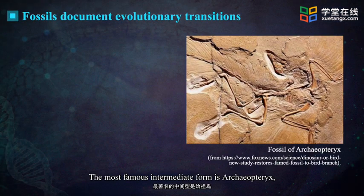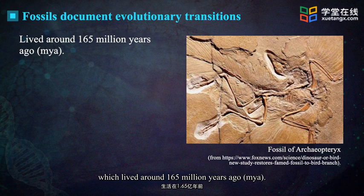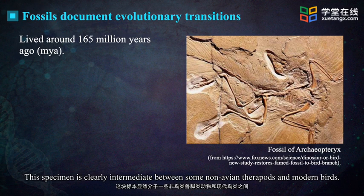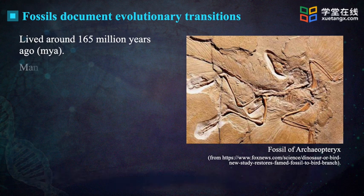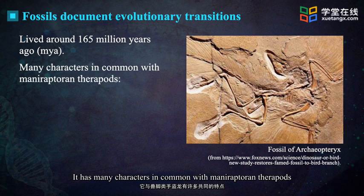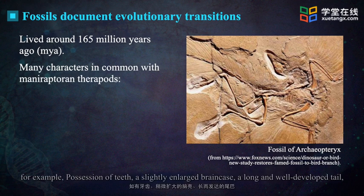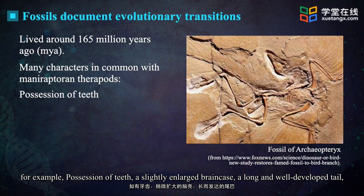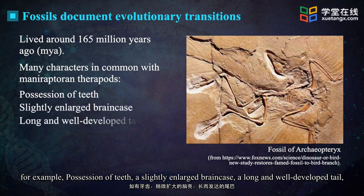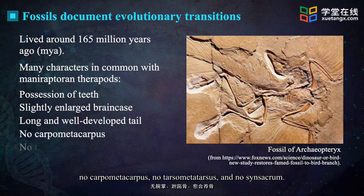The most famous intermediate form is Archaeopteryx, which lived in the late Jurassic around 165 million years ago. This specimen is clearly intermediate between some non-avian theropods and modern birds. It has many characteristics in common with maniraptoran theropods — for example, possession of teeth, a slightly enlarged brain case, a long and well-developed tail, no carpometacarpus, no tarsometatarsus, and no synsacrum.